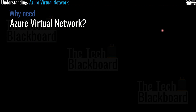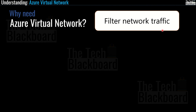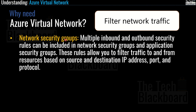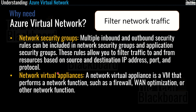Let's understand how Azure virtual network helps you filter network traffic. First, we have network security groups, which can include multiple inbound and outbound security rules that allow you to filter traffic to and from resources based on source and destination IP address, ports, and protocol. You will likely get exam questions on network security groups in AZ-900. Next, we have network virtual appliances — a VM that performs network functions such as firewall or WAN optimization.